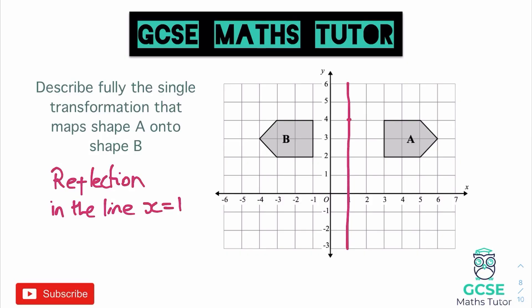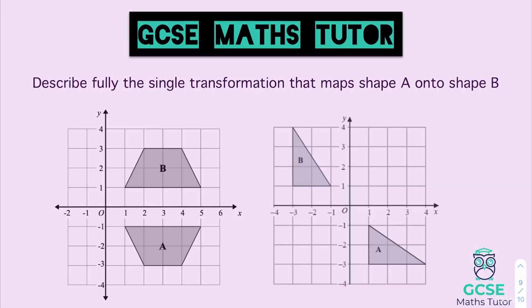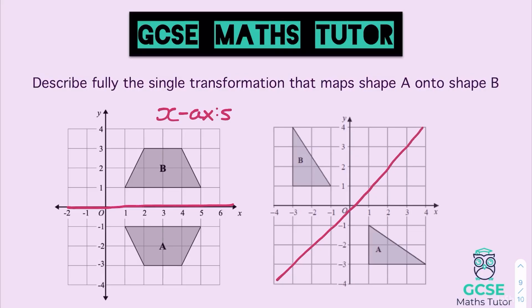Bear in mind it could have been reflected in a diagonal line, in which case you should be able to spot that as well. Here are a couple for you to have a go at — think about whether it's an x equals line, a y equals line, or a diagonal line. Pause the video, have a go, and we'll go over the answers in a sec. The first one here has been reflected in the x-axis — so we'd say: a reflection in the x-axis. The next one is one of these diagonal lines — there's no vertical or horizontal line we could reflect it in; it's been reflected in that positive diagonal, so that would be a reflection in the line y equals x.